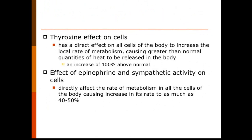The main hormones concerned with heat production and basal metabolic rate are, first, thyroxine from the thyroid gland, which can enhance BMR above 100 percent above normal by increasing the number of ATPs in cells, leading to higher metabolic rate and more heat production. Second is epinephrine from the sympathetic system and adrenal medulla, which can increase BMR by 40 to 50 percent. These are the two key hormones affecting heat production.